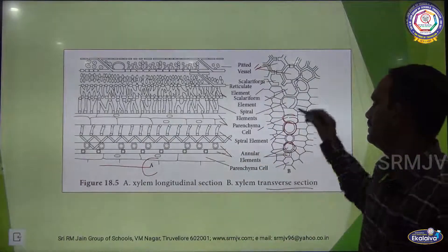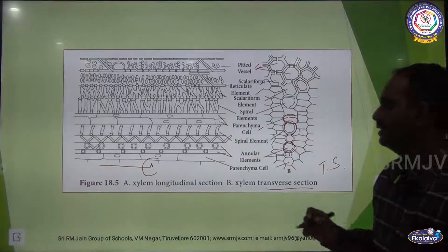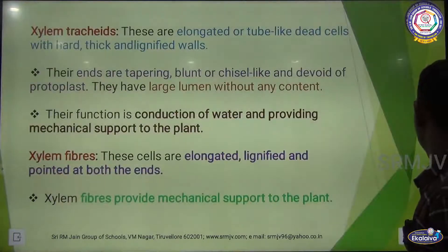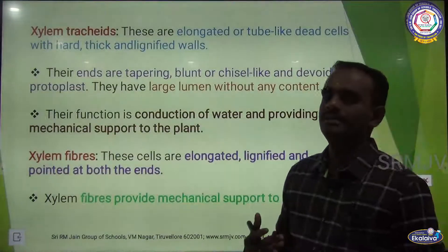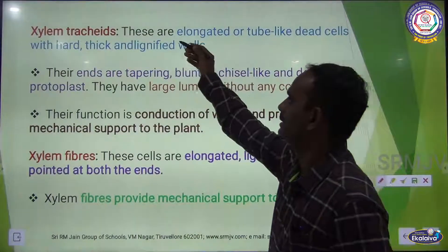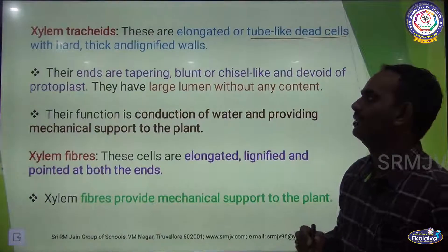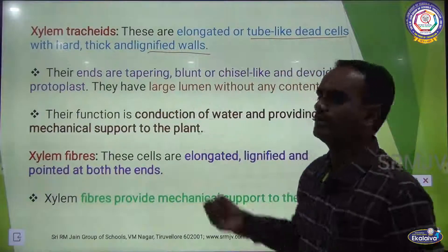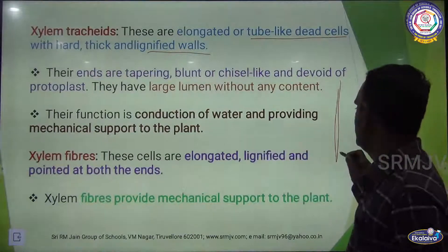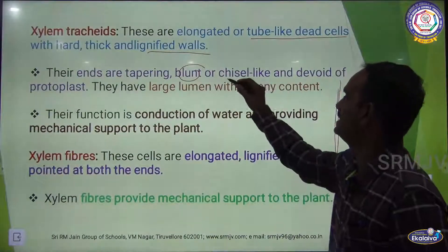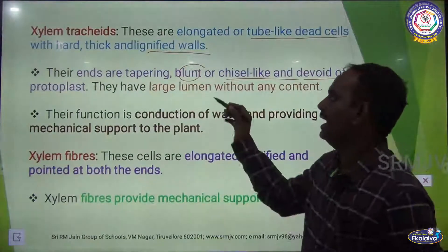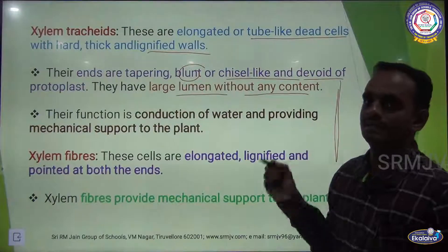See the picture here — this is a transverse section, abbreviated as TS. Longitudinal section is called LS. Xylem tracheids are elongated tube-like dead cells with hard, thick, and lignified walls. Their ends are tapering with a blunt or chisel-like shape, and they are devoid of protoplast. They have a large lumen without any content.